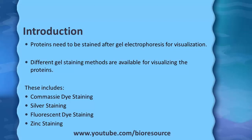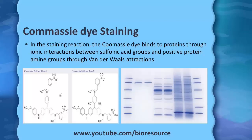There are different gel staining methods available for visualizing proteins. Some of the most commonly used methods are Coomassie dye-based staining, silver staining, fluorescent dye staining, and zinc staining. Let's see each one in detail.